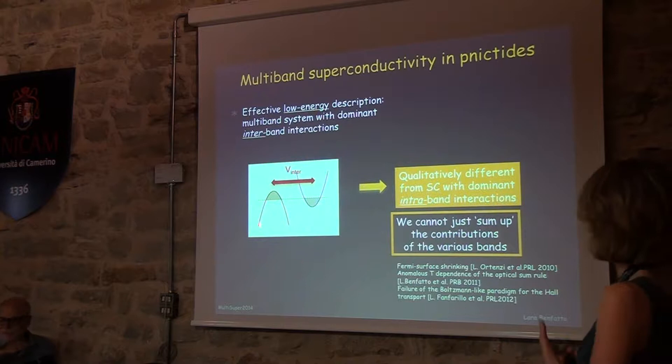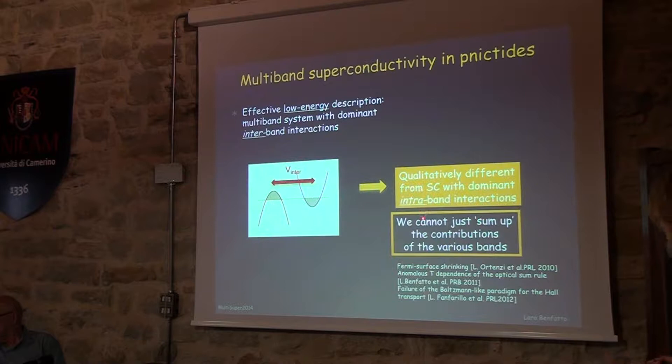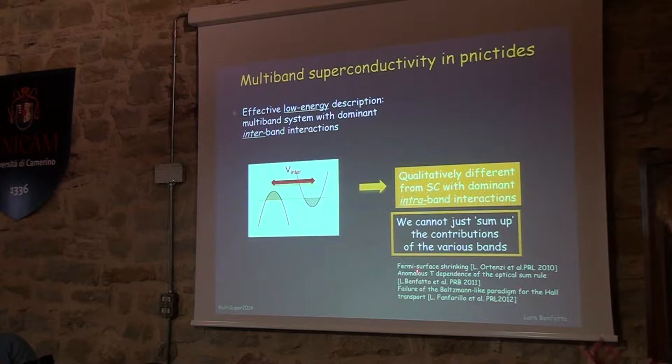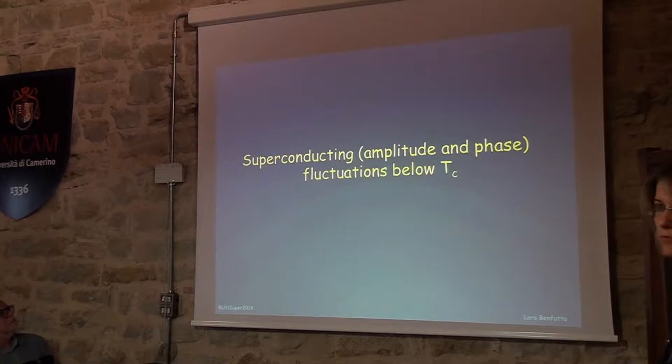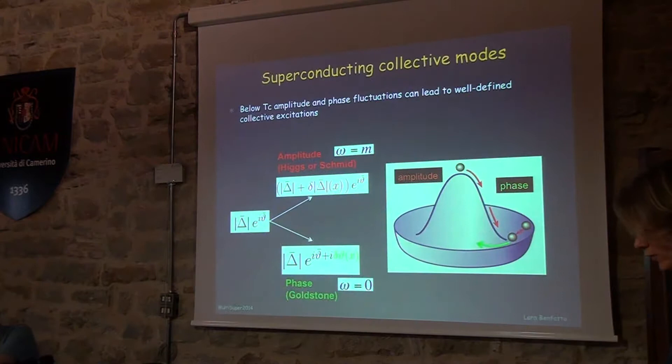This inter-band nature of the interaction changes in a qualitative way the behavior of the superconducting properties and also the properties of the system above TC. This is something we have been discussing in recent years, and the conclusion is that you cannot just sum up the contributions of the various bands as one would be tempted to do in other contexts. What we will discuss more specifically today is the behavior of the superconducting amplitude and phase fluctuations below TC — well below TC. While we have been discussing until now the expansion near TC, we really go to the low-temperature counterpart of this kind of expansion.